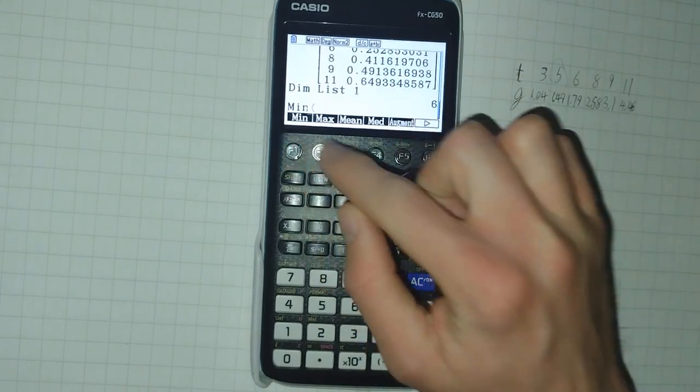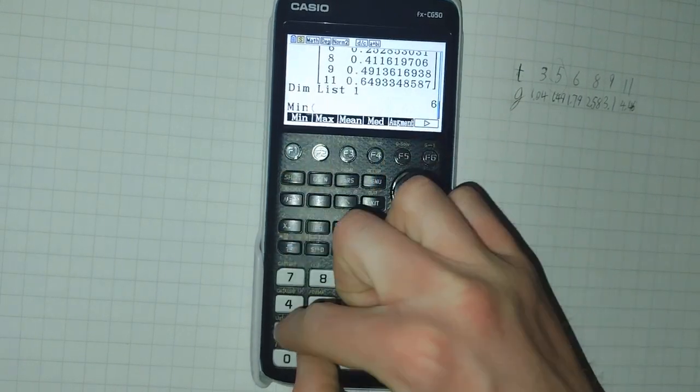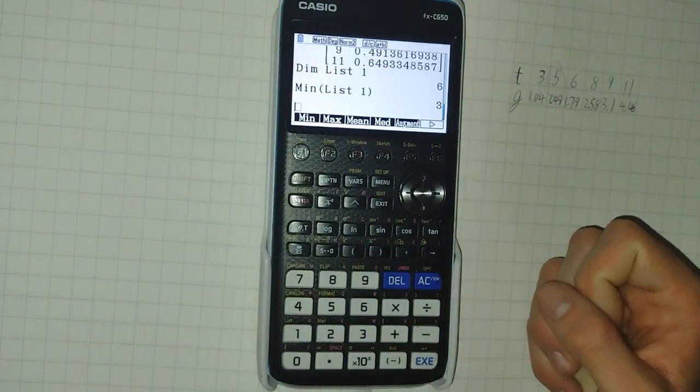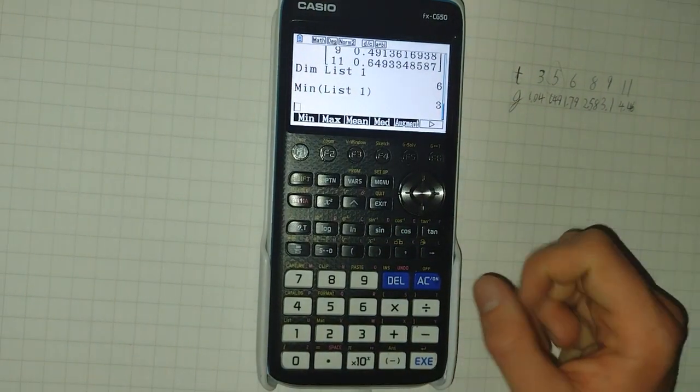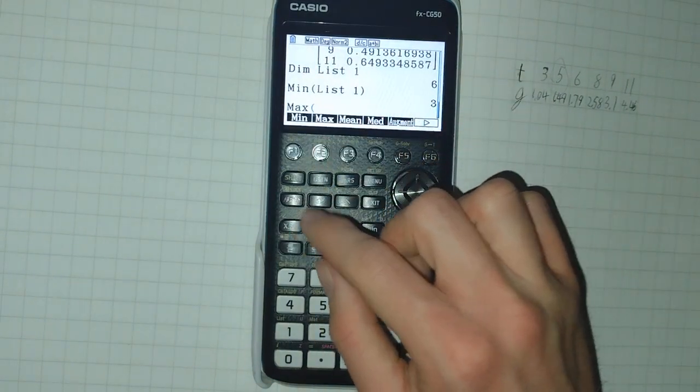Min, which is pretty self-explanatory, gets you the minimum elements of a list.